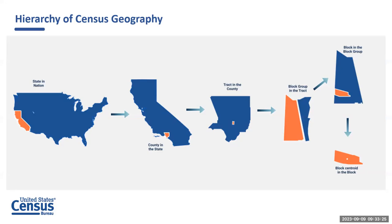Another important element to be aware of is census geography. This diagram shows the hierarchy of the census and how geography works. The census block is a small area similar to a square block in your neighborhood, which makes up a block group. Looking at the diagram from right to left: the block nests within the block group, which nests within the census tract, which nests within the county. Here we have a county within the state of California, and then the state nests within the nation. When utilizing our data tools, which Mack will demonstrate later, this is how you search for a particular characteristic within a geography.